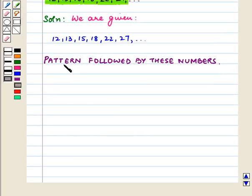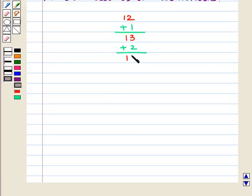For this we find the pattern followed by these numbers. Because the first number given is 12, if we add 1 to this number, we get 13. Now, if we add 2 to 13, we get 15.